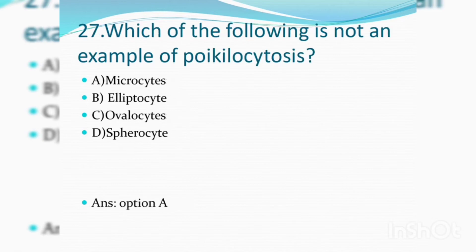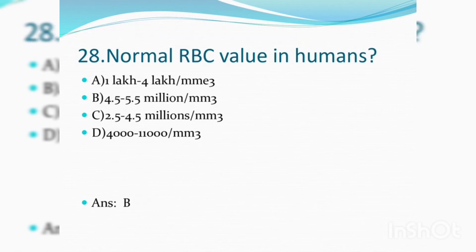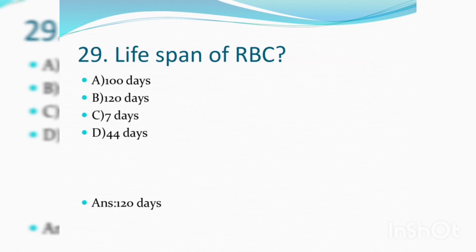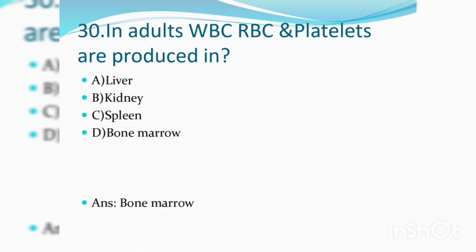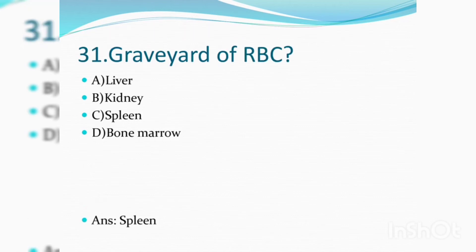Which of the following is not an example of poikilocytosis? Options: microcytes, elliptocytes, ovalocytes, spirocytes — these are examples of poikilocytosis. Normal RBC value in humans is 4.5 to 5.5 million per millimetre cube. Life span of RBC is 120 days. In adults, WBCs, RBCs, and platelets are produced in bone marrow. The graveyard of RBC is the spleen.